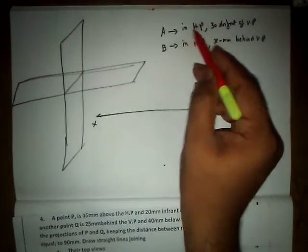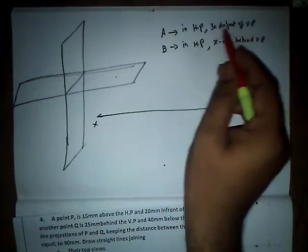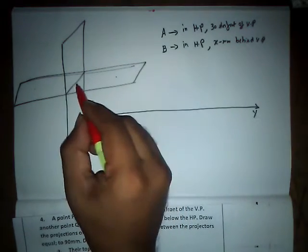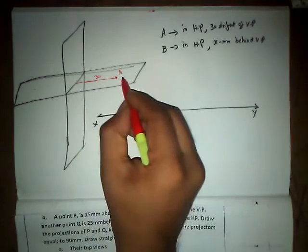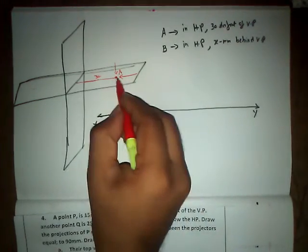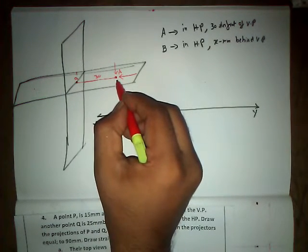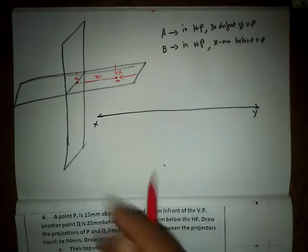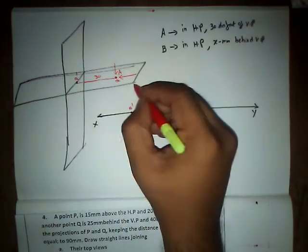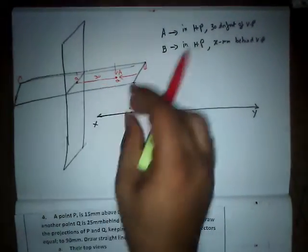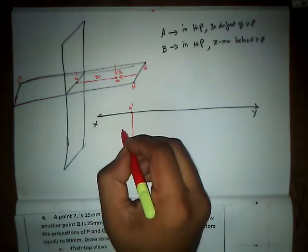As per the question, point A is in HP and 30mm in front of VP. In front of VP means forward, so the point lies in the first quadrant. This is point A, 30mm in front of VP. The front view projects onto the XY reference line as A', and the top view projects downward as small a. So A' is on the XY reference line and the distance below is 30mm.